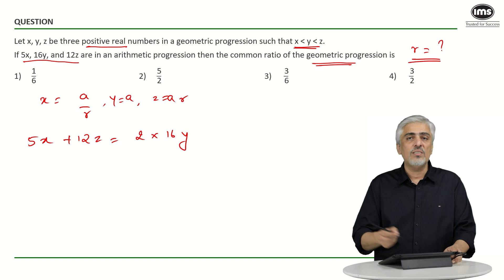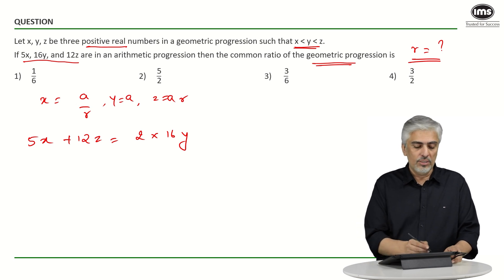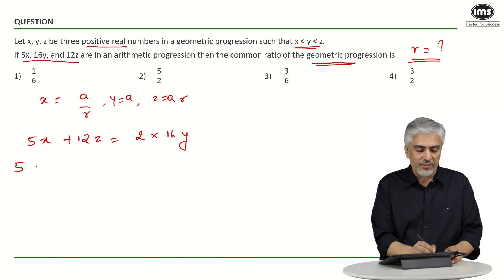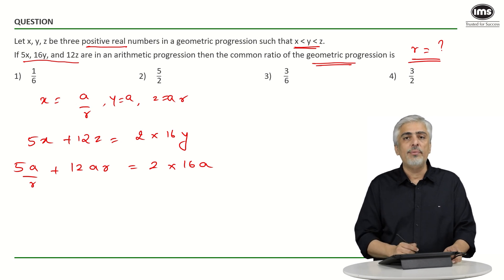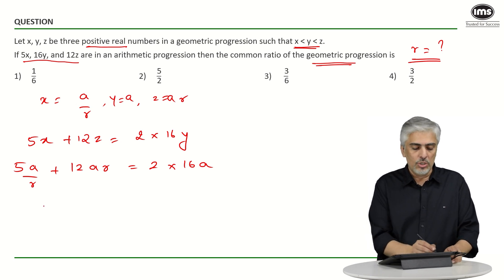That means 5x plus 12z will be equal to 2 times 16y. Replace x, y, z with a and r. So x is a upon r, so we will get 5 into a upon r plus 12 into ar is equal to 2 into 16 into a.